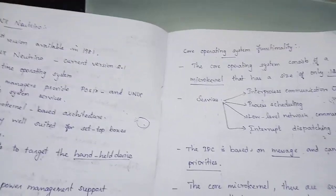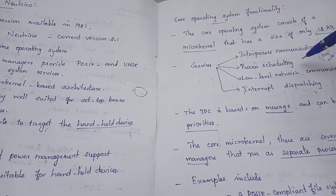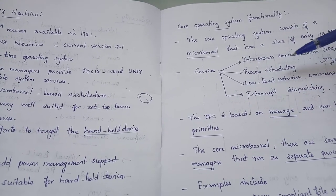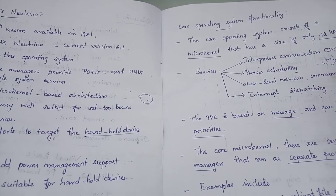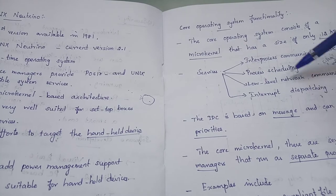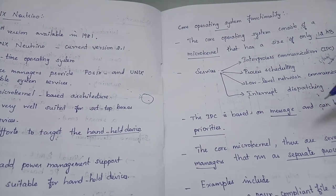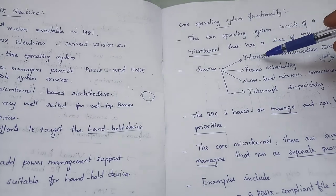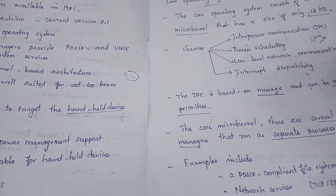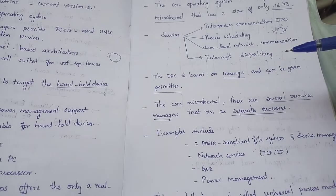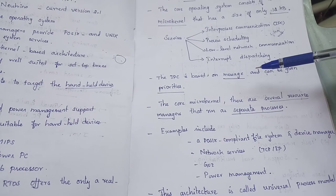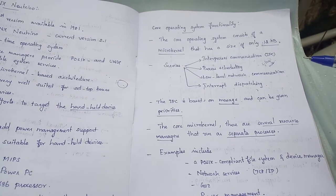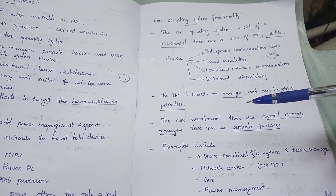QNX Neutrino supports process scheduling and multi-tasking. Inter-process communication is message-based, with priority levels that can be configured. The core micro-kernel acts as a resource manager, where each resource is a separate process with its own separate memory space allocated.